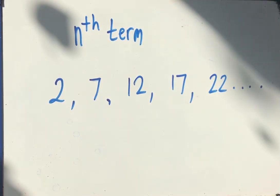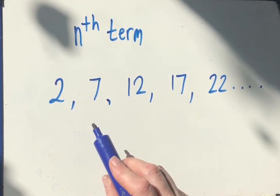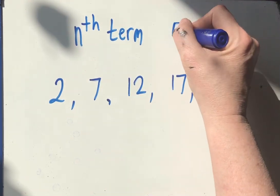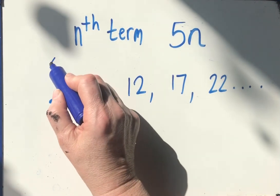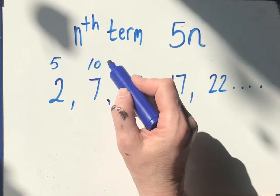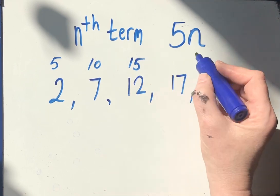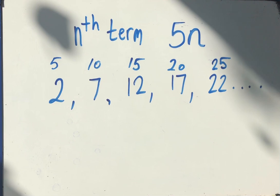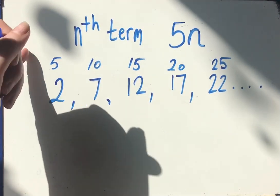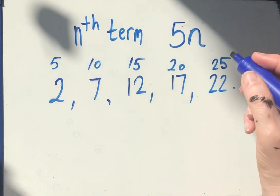Well I have to add 5 each time, so it is related to the 5 times table. But how is it relating to the 5 times table? Well 5, 10, 15, 20, 25. Can you see what I've got to do each time? The difference between 5 and 2 is 3, so 5n take away 3.